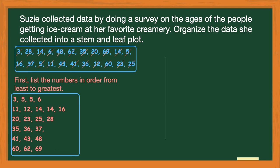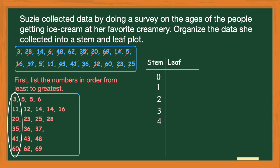Now I'm ready to put my leaves on. Going back to my top row, my first number is 3. I can write 3 as having a zero in the tens place and a three in the ones place — that value is 3. Then I go ahead and put down 5, 5 years old, and then 6 year olds. Then I go to my next row with 11, 12, 14, and 16. So I put my 1 for 11, my 2 for 12, and since I do have two people who are 14 I put the 4 down twice, then a 6 for 16.